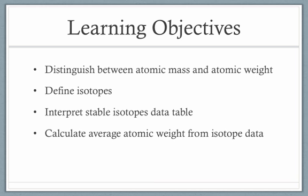Let's start with a quick list of learning objectives. To begin with, we're going to need to distinguish between atomic mass and atomic weight. These are terms that are often used interchangeably, but they have subtle differences. That'll lead us into a discussion of isotopes — we need to define what an isotope actually is and how they apply to atomic weight. We'll need data from a stable isotopes data table, and finally we'll wrap up by calculating average atomic weight from that isotope data.